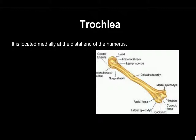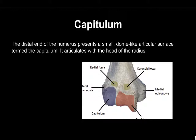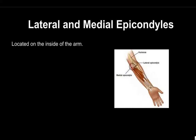The trochlea is located medially on the distal end of the humerus. The capitulum is the distal end of the humerus and presents a small dome-like articular surface. It articulates with the head of the radius. The lateral and medial epicondyles are located on the inside of the arm.